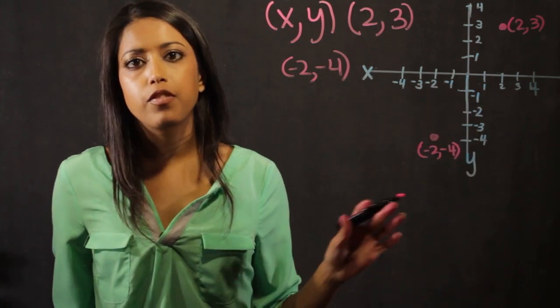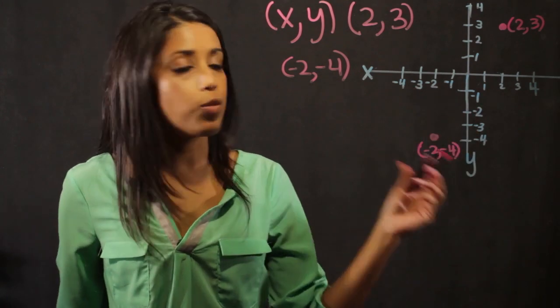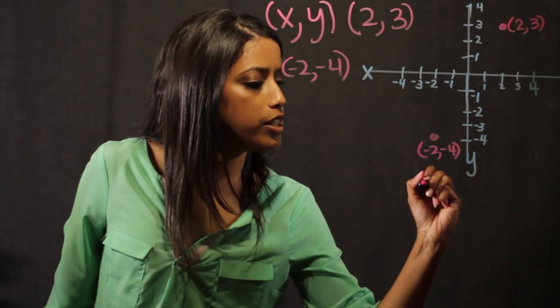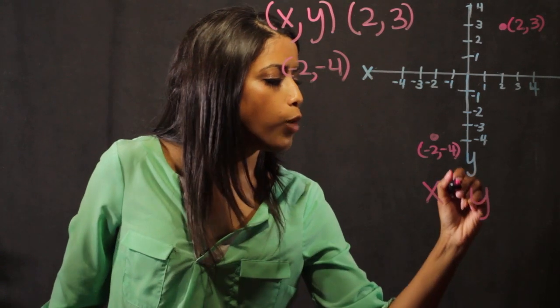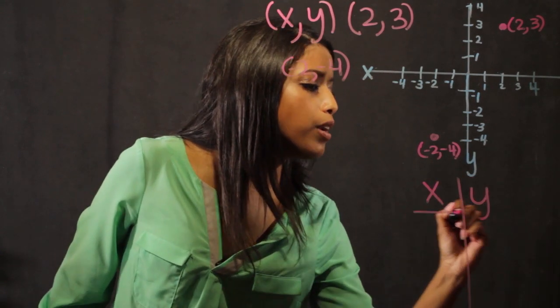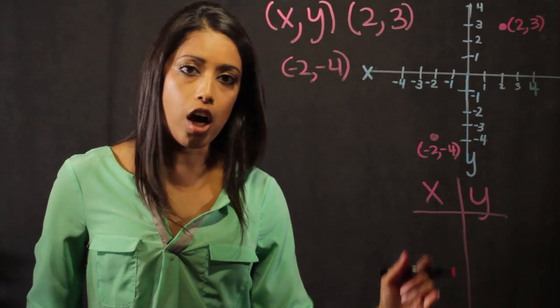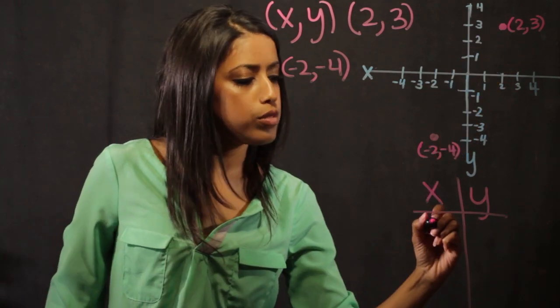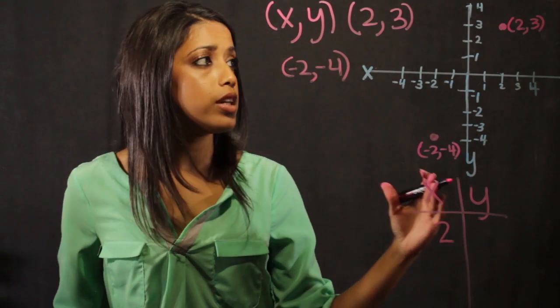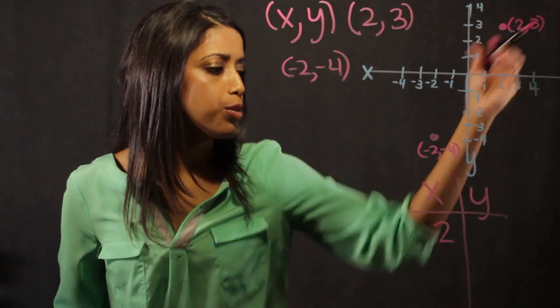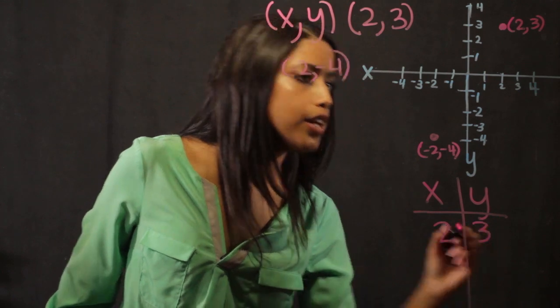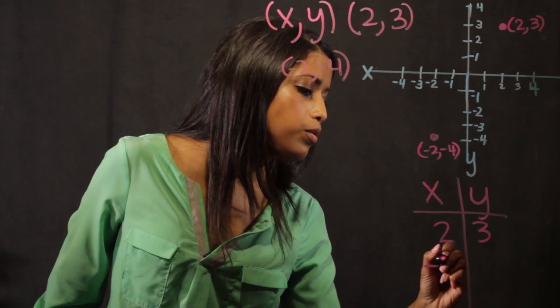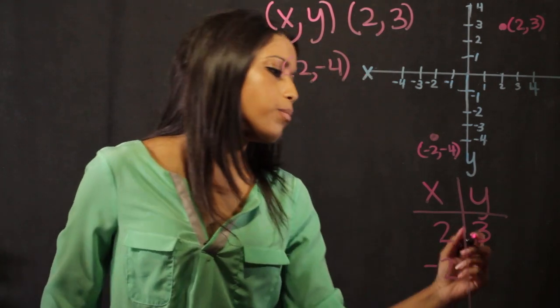Another way of organizing information when using the x and y-axis is to use what's called an x-y chart. An x-y chart looks like this. What we do with it is we put all of our x values in this column and all of our y values in this column. So my x value was two, so it's going to go here. And the coordinating y value with that was three, so it comes over here. And this problem right here, we have the x value at minus two and the y value at minus four.